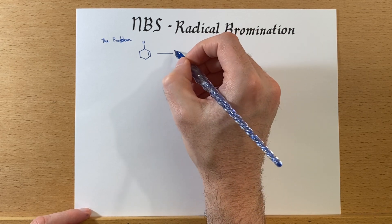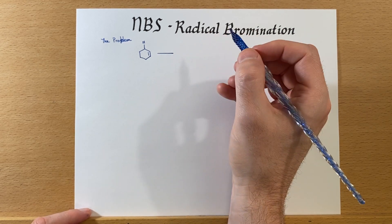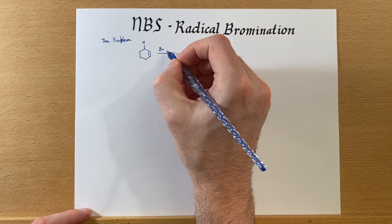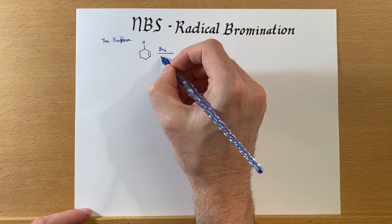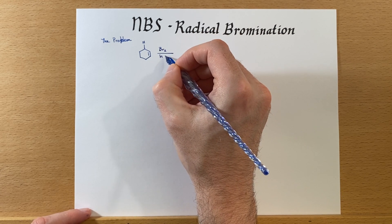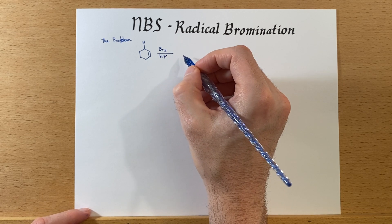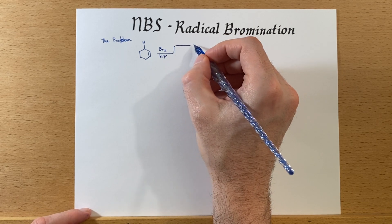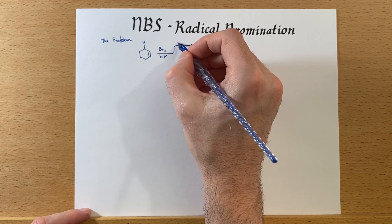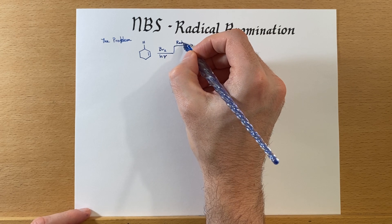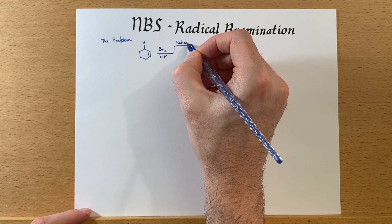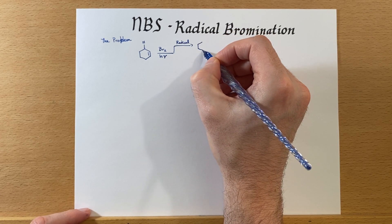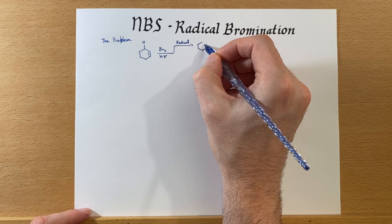If we actually want this to go a radical route, we're going to add our bromine in and make sure that we're shining a bunch of UV light on it. And we could go radical and get our desired product.